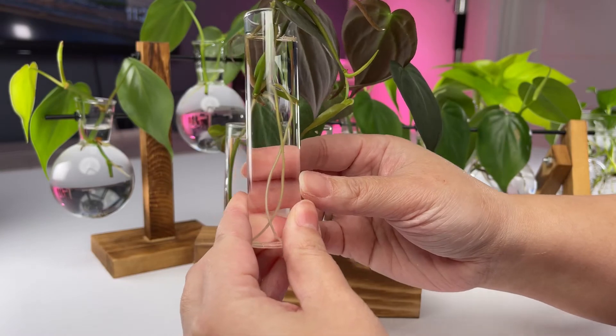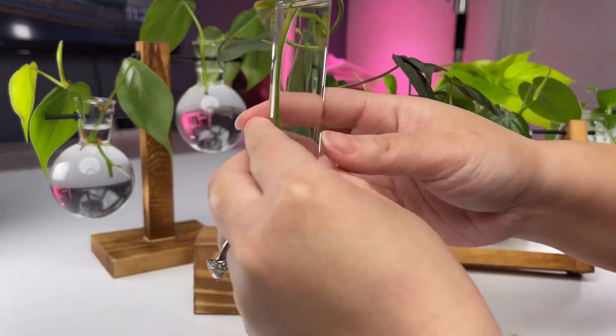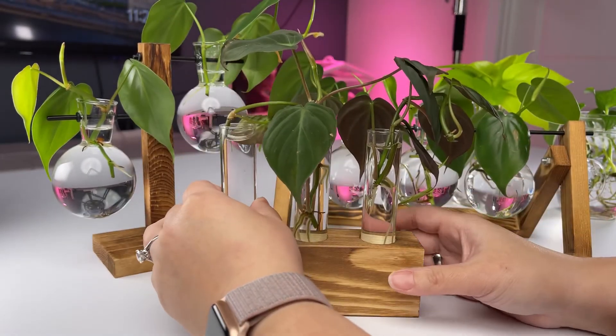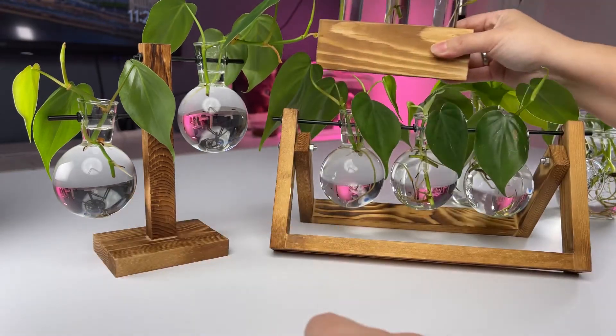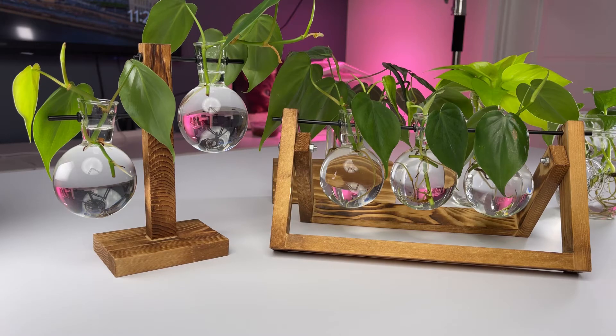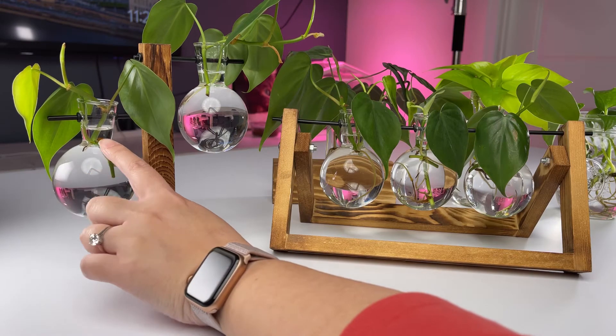Actually I have one of them that didn't really root yet and it might not. That's the thing with propagations, some of them will root, some of them won't root. Not all are successful. And I just use tap water for these cuttings. These are the philodendrons and pothos, and they do fine with regular tap water. I change the water out maybe once a week. As the water evaporates, I just fill it back up to the line here.